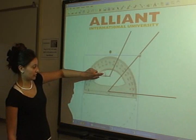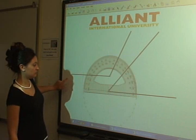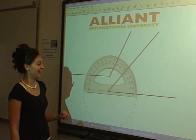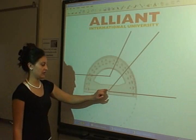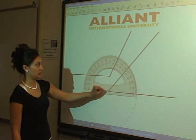take our protractor and move it to the vertex of the angle. You can tell by doing that where this little circle with the cross through it meets at the vertex.